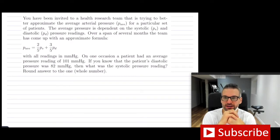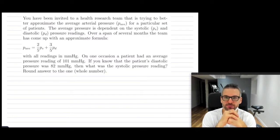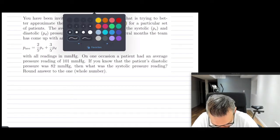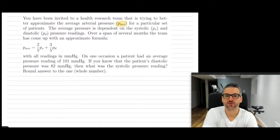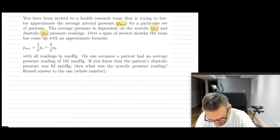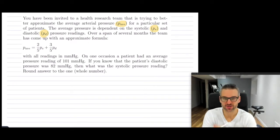You have been invited to a health research team that is trying to better approximate the average pressure for a particular set of patients. The average pressure is dependent on the systolic and diastolic pressure readings. There's two readings that we always take for blood pressure: one is when the heart is pumping and then when it's relaxing.